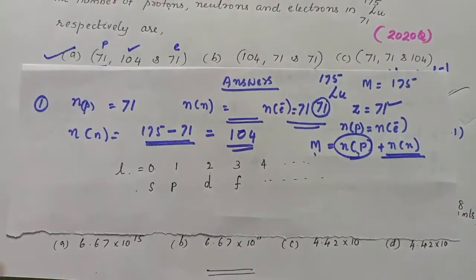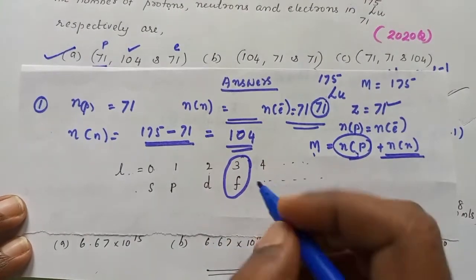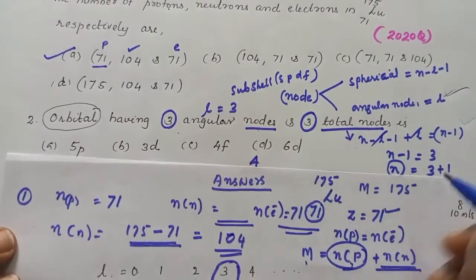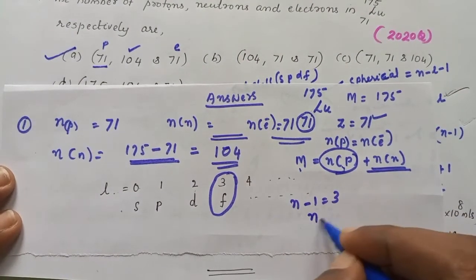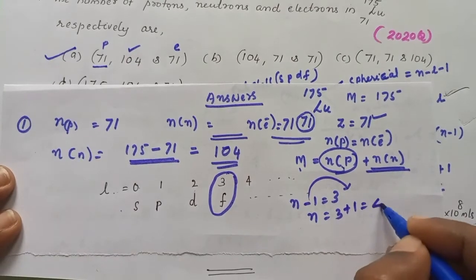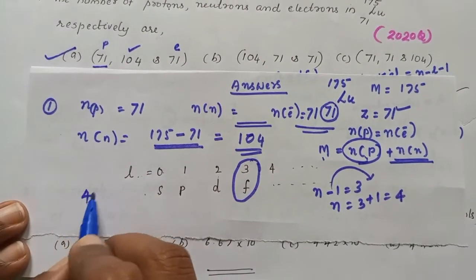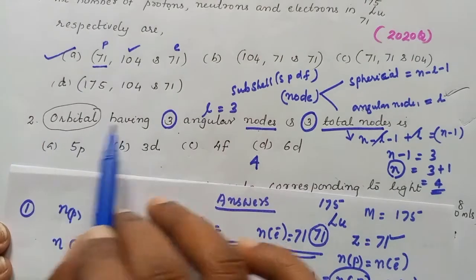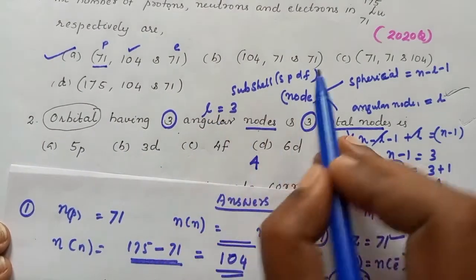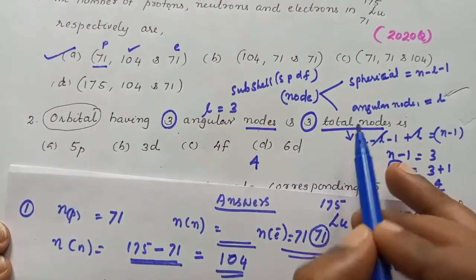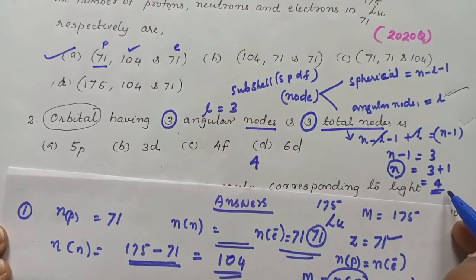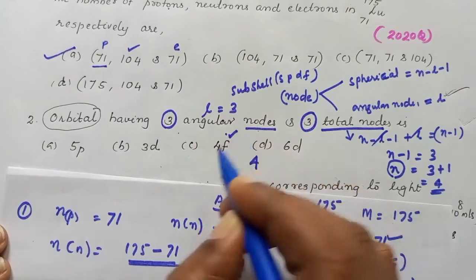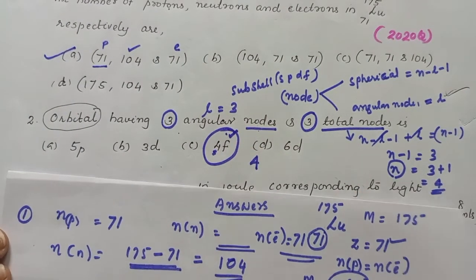Here l equals 3, which means that orbital is the F sub-shell. That F sub-shell is present in the fourth shell, since n minus 1 equals 3 gives n equals 4. So the orbital is 4F. The answer is 4F orbital, which corresponds to angular node 3 and total node 3.